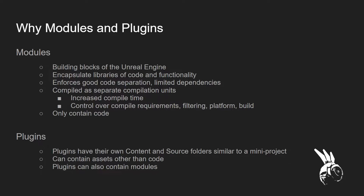A plugin has a content folder and a source folder, like you would in your project. Plugins can contain assets as well as code — things like player models, materials, textures, and so on — whereas modules are generally just C++ classes and code. Plugins can also contain modules: if you have a module you want to use with a plugin, you can place it inside the plugin and it's available to use.